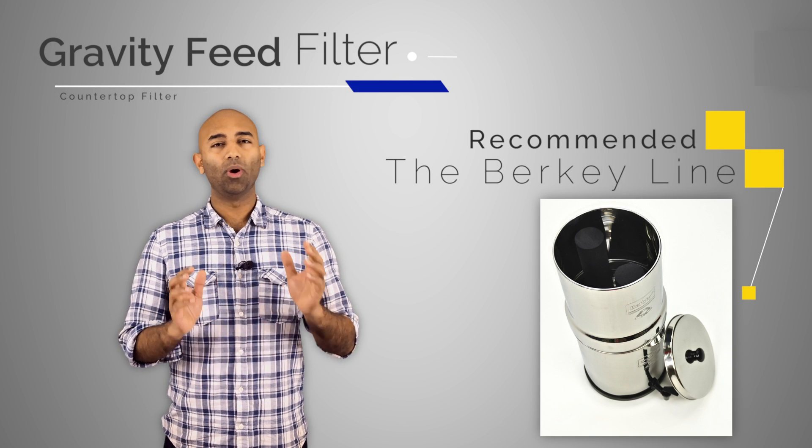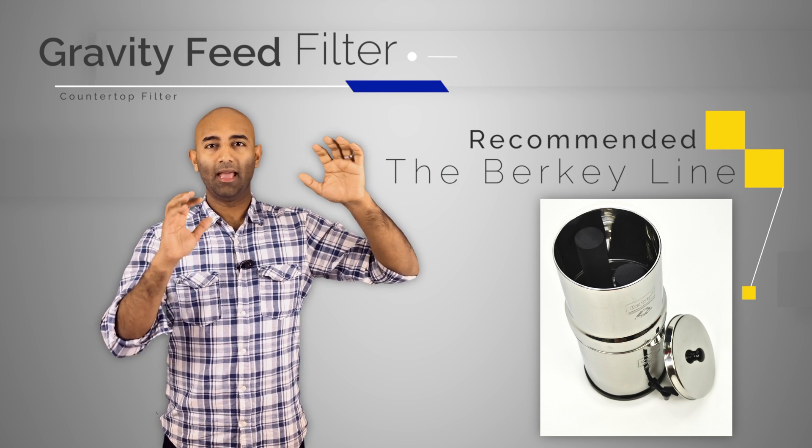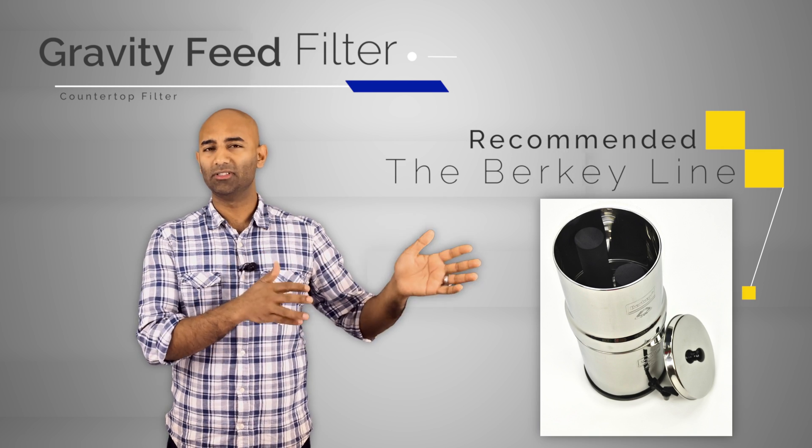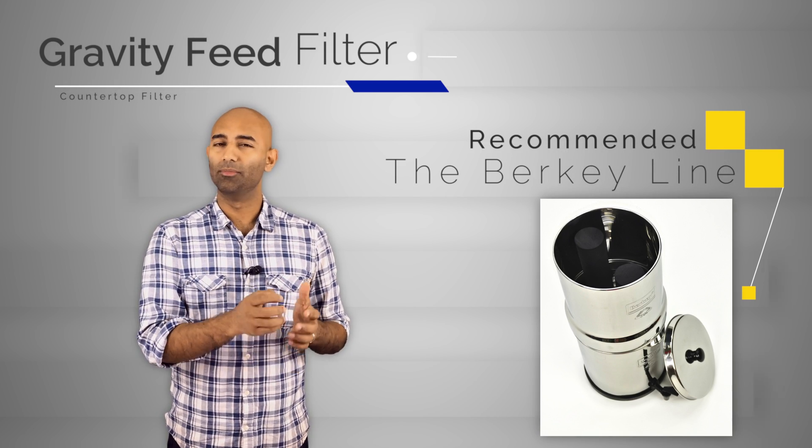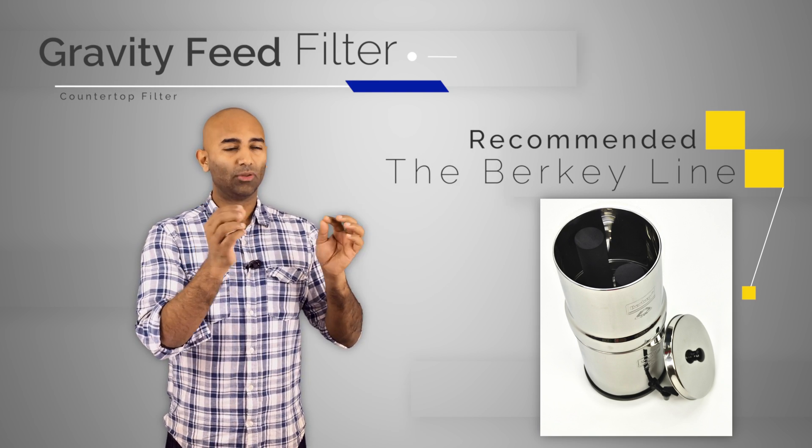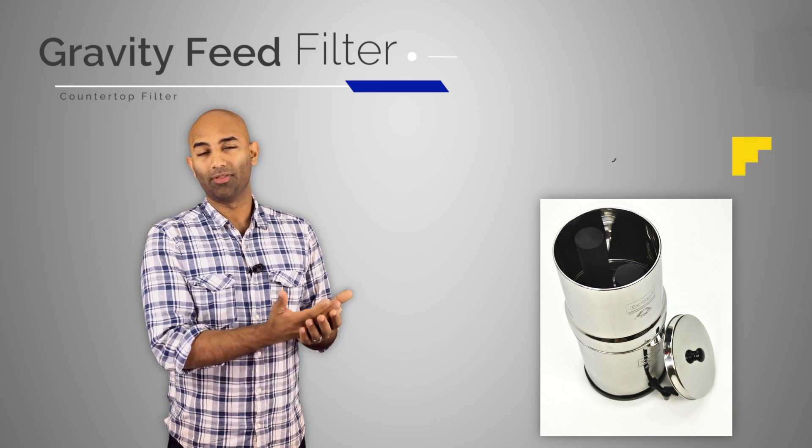The way they work is basically that you pour water into the top reservoir and it'll go through these filters and again you can buy different types, kind of like that three stage filter. You can get different types of filters for your needs. I think they have a fluoride removal filter and all kinds of other stuff. Based on how many filters you have the water will trickle down just like in a Brita and it'll collect in the bottom reservoir and that's where your water is.